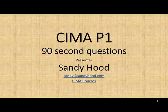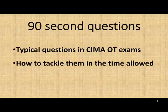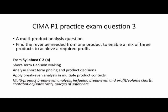Hello, my name is Sandy Hood. This is a quick video to help students preparing for the CIMA P1 exam. We're looking at one of the Pearson VUE sample exam questions — question number three — a multi-product analysis question where we have to find the revenue needed from one product to enable a mix of three products to achieve a required profit. This is taken from syllabus section C2B, looking at short-term decision-making.